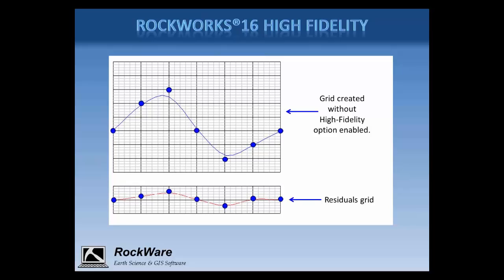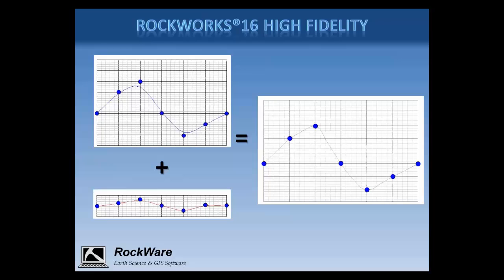The program addresses this by calculating the residual for each point — the difference between the measured data and the modeled values in the grid. The residuals, typically small numbers, are displayed in the lower diagram as blue points. The program then interpolates a second grid based on these residuals, represented by the red line, and adds the two grids together to produce a grid that better honors the original data. Keep in mind that if you have more than one control point within a grid cell, the high-fidelity option won't do much, since one grid cell can't honor multiple measured values — in that case, you'd need to decrease your grid spacing.